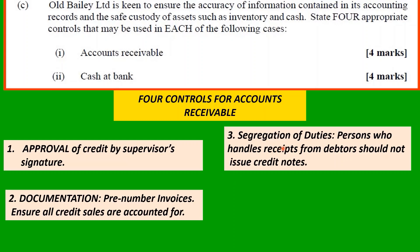Third: segregation of duties. Persons who handle receipts from debtors should not issue credit notes. If you are handling the cash, you should not be documenting credit notes or invoices. The idea is to separate the recording function from the custodial function — those handling cash should not also be recording or making out credit notes and invoices.